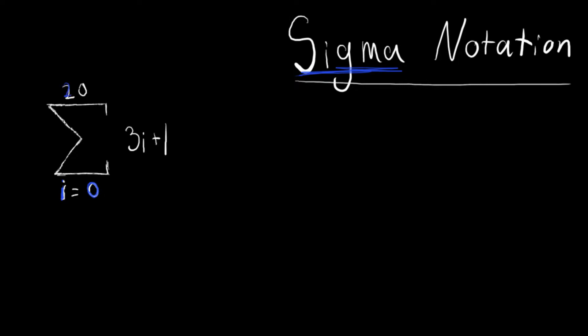Up here, we have a 20, and over here, we have the expression 3i plus 1. I'm going to explain what all this means. So down here, this is the value that we start at with i in this expression. So right now, i would equal 0.